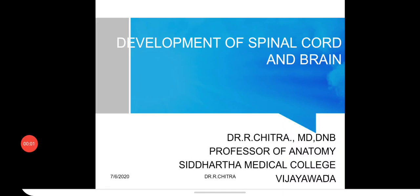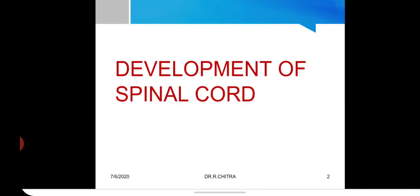In this class we will continue with the development of the spinal cord and the brain. In the last class we covered the development of the nervous system and neural tube formation, which gives rise mainly to the central nervous system. Today's topic is the development of the spinal cord and brain from the already-formed neural tube. We will start with the spinal cord, then cover the brain.